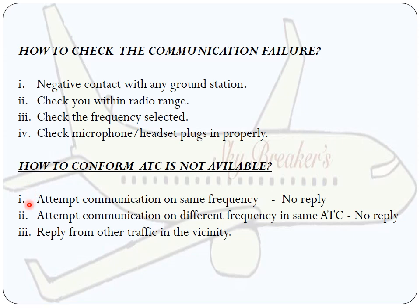Next, how to confirm ATC is not available. First, attempt communication on the same frequency — if there is no reply from the ground station. Second, attempt communication on a different frequency with the same ATC, such as ground approach control — again no reply. Last, a reply from other traffic in the vicinity: aircraft tuned to the same frequency in the vicinity will reply to you, confirming that ATC is not available.